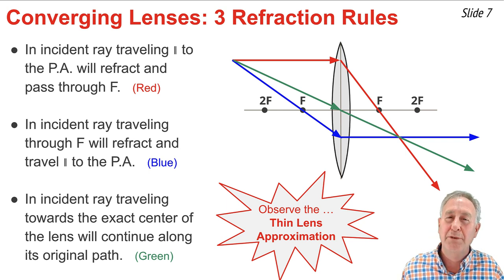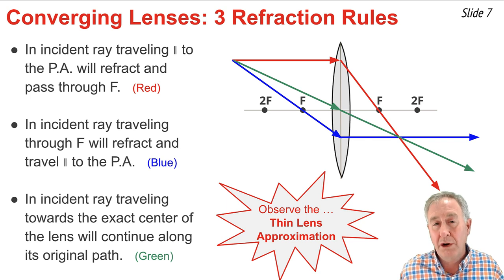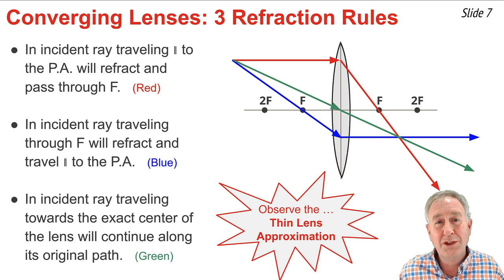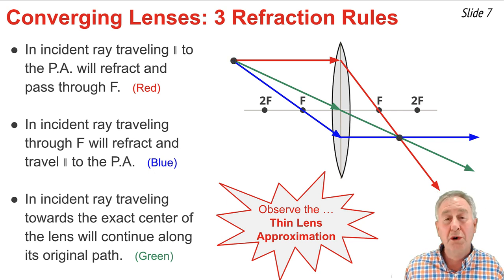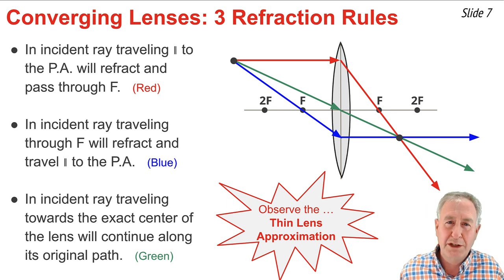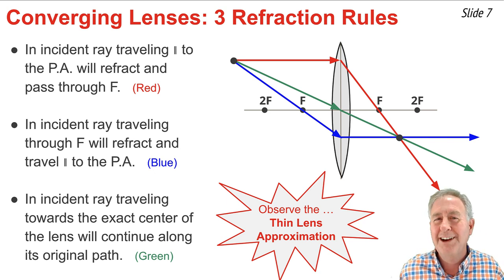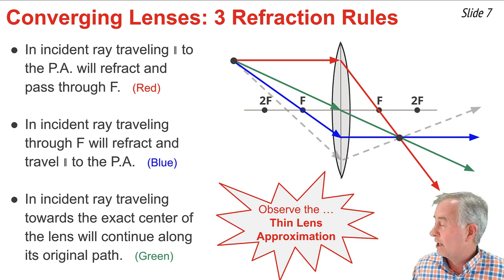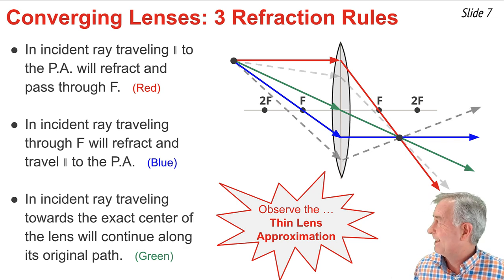You might also notice that all of the incident rays started at the same point, and on the opposite side of the lens, they all intersected at the same point. These two points — the starting point and the intersection point — are denoted by the black dot on the diagram above. This is true for any situation: any light that starts from the same point should intersect at the same point on the opposite side of the lens. Because of this general principle, we could draw other sets of incident and refracted rays, like this one and like this one.